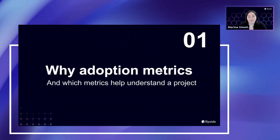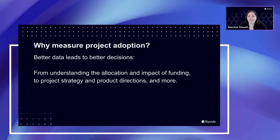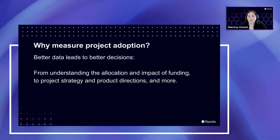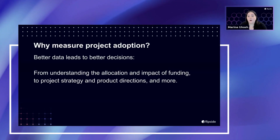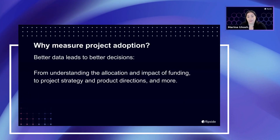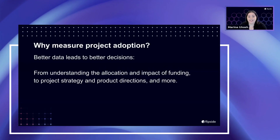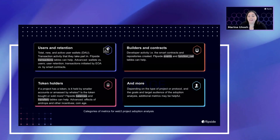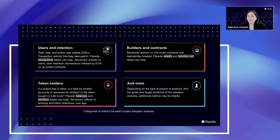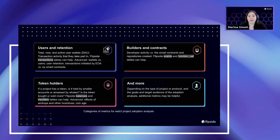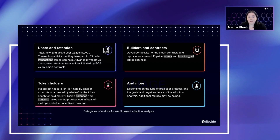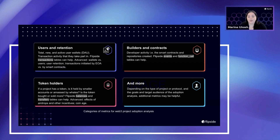So first of all, why measure adoption? A comprehensive set of metrics that goes beyond the basics really leads to making better decisions. This could be understanding the allocation and impact of your funding, helping a project with strategy or product. Whatever the decision is, a holistic, well-rounded adoption analysis is a base for understanding your project through robust, data-driven decision making. One might wonder why go beyond one or two go-to stats such as TVL or token price.